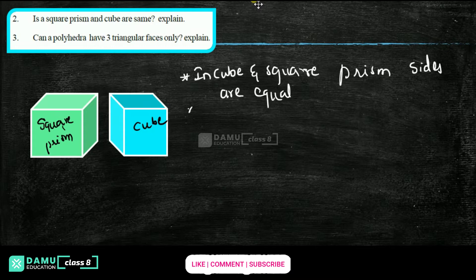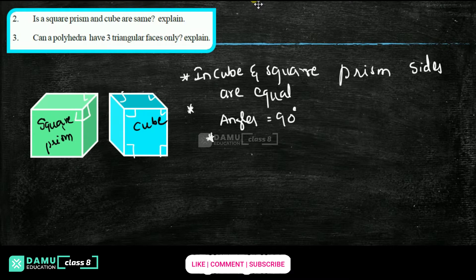The next point is that all the angles will be 90 degrees — angles at the corners are 90 degrees. In a square, all the sides are equal, and in a cube also the sides are equal and the angles at the corner points are also equal to 90 degrees. So yes, a square prism and a cube are the same.